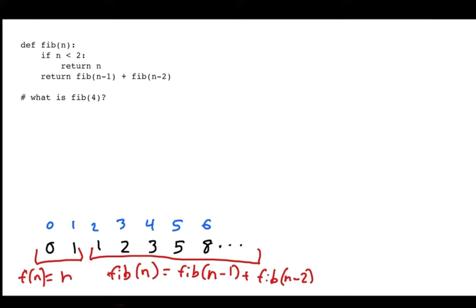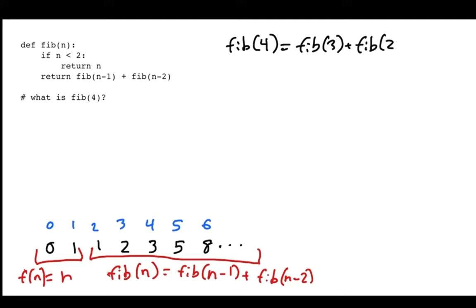So how could we trace through this? In particular, if I want to figure out what Fibonacci of 4 is. Well, n is 4 and that's not less than 2, so we go to the other case. That's going to be Fibonacci of 3 plus Fibonacci of 2. I don't know what that is yet — I need to solve some other problems first and then come back.